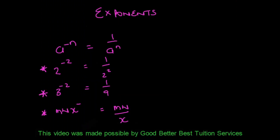Hi there everyone and thank you for joining us today. Today I want to focus on the negative exponent rule, where we have a to the power negative n and we need to write this as a positive exponent. We do that by writing it as 1 over a to the power n.